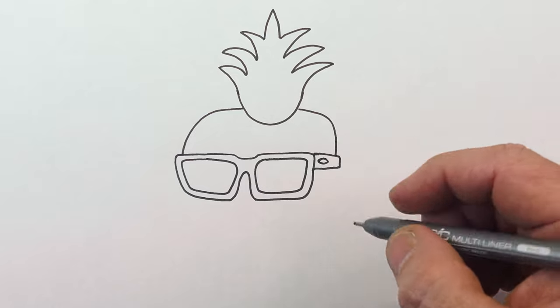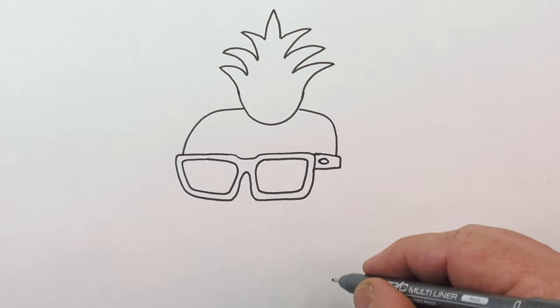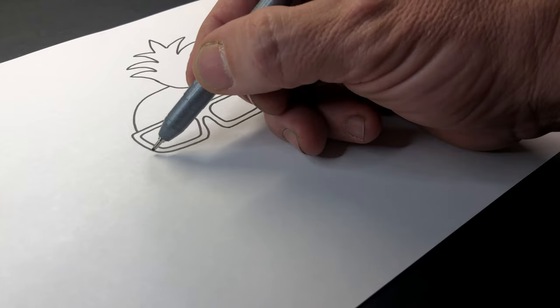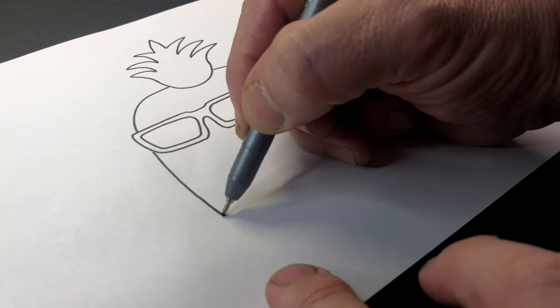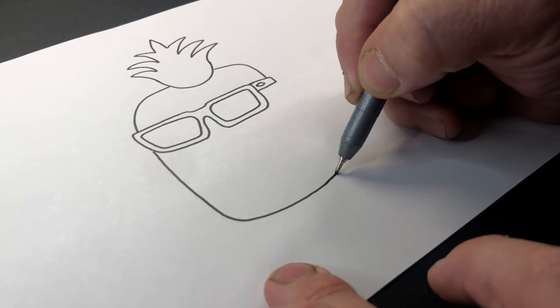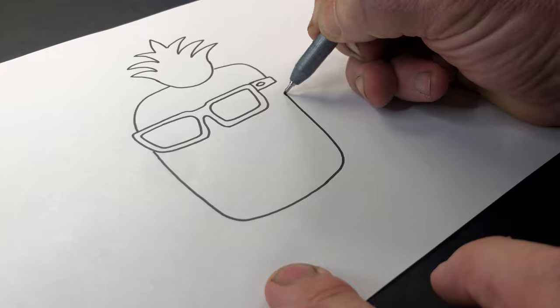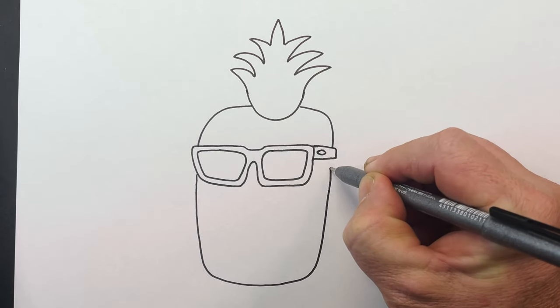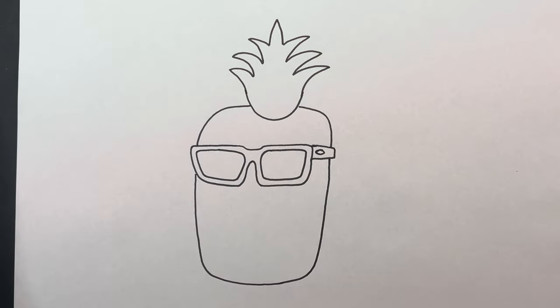Now we're going to bring this line right down and around. This is the bottom part of the pineapple. So down and around and back up like so. There's our pineapple shape.